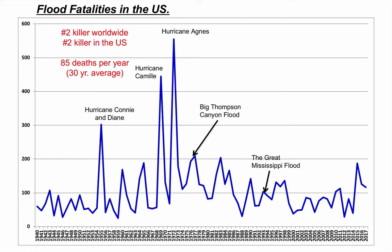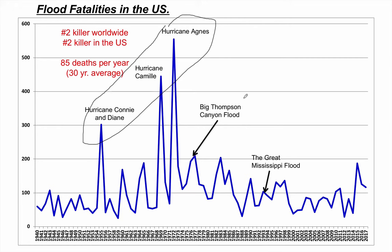Interestingly, this is going to be one of the only weather types that I will show you that does not show a clear downward trend with time. We don't have our major flooding death catastrophes from hurricanes that we used to have, because of the advent of satellite. But outside of that, we've still maintained a background state of somewhere around 100 deaths per year. I've got five things labeled here — three of them are hurricanes — so we're certainly going to talk about the type of flooding from hurricanes. We'll also discuss flash flooding and widespread flooding, like the Great Mississippi Flood of 1993. Flooding: second deadliest weather phenomenon on Earth and in the United States.